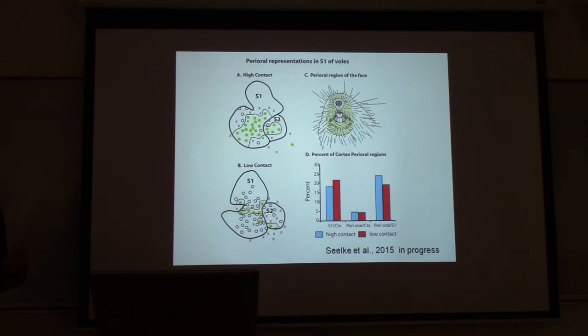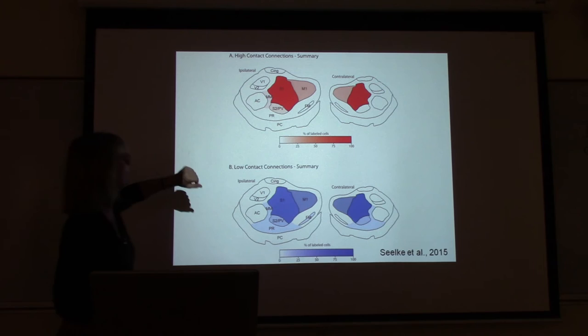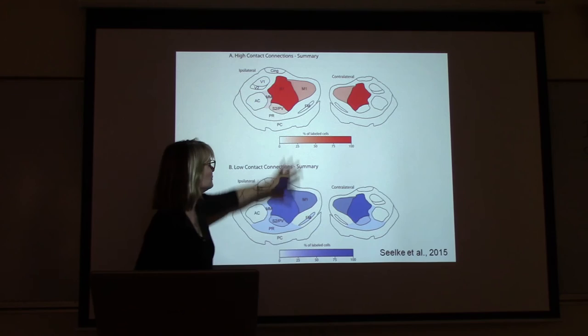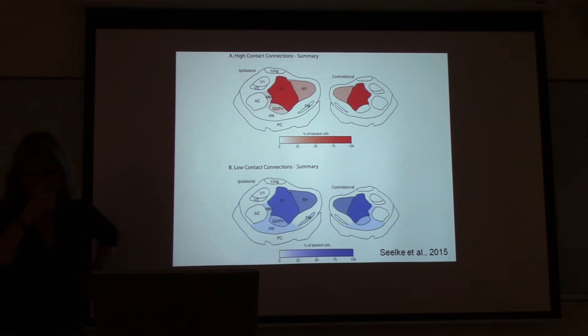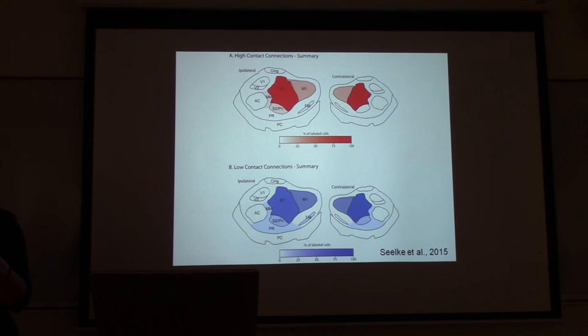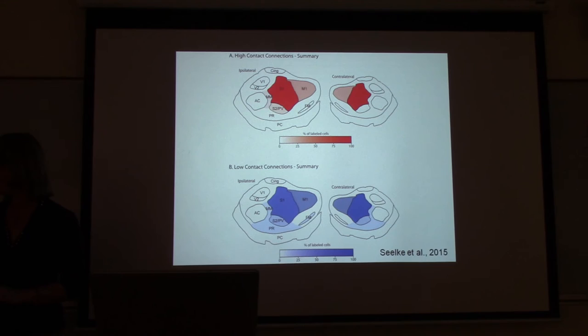Our question is: what do their brains look like? It turns out that if you map the somatosensory cortex, you see a huge representation of the perioral structure — one of the regions receiving a lot of tactile contact — in high-contact animals. And if you look at cortical connectivity, low-contact animals have additional connections in both hemispheres that you don't see in high-contact animals. So by doing something much more subtle — changing the amount of contact received as a baby — you can change functional organization of the neocortex and change cortical connectivity.